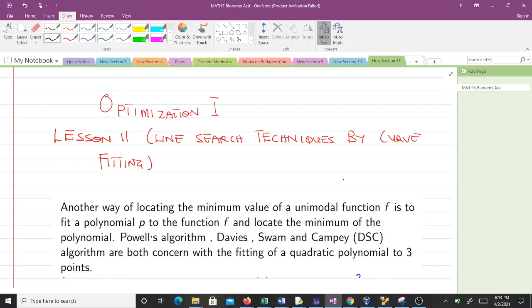We've been discussing the three-point search method, the Fibonacci search method, and the golden ratio. But another way of locating the minimum value of a unimodal function f is to fit a polynomial p to the function f and locate the minimum of the polynomial.